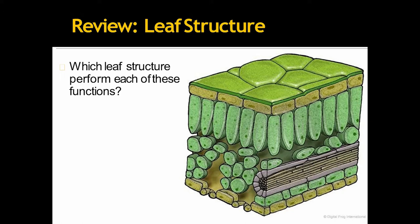Now, which leaf structure performs each of these functions? Please try to tell this. Which part is prevent water loss and gaseous exchange? Yes, you were right, the cuticle part, the upper glossy portion.